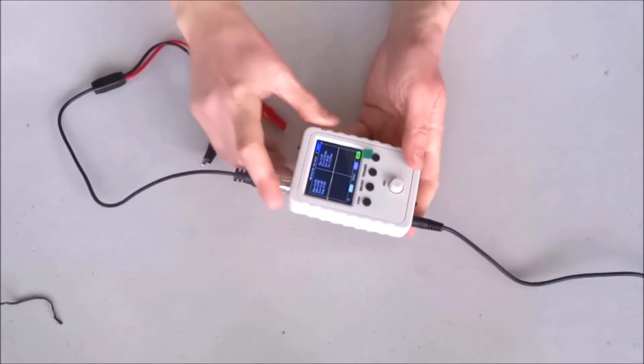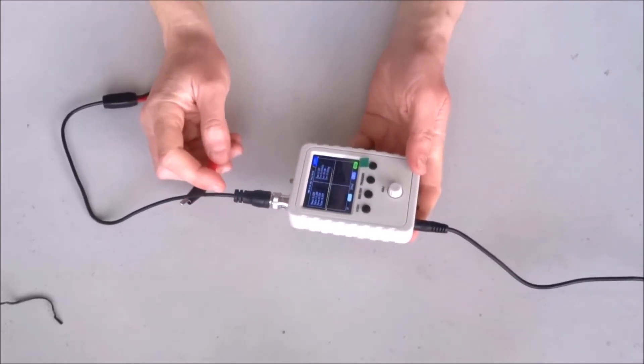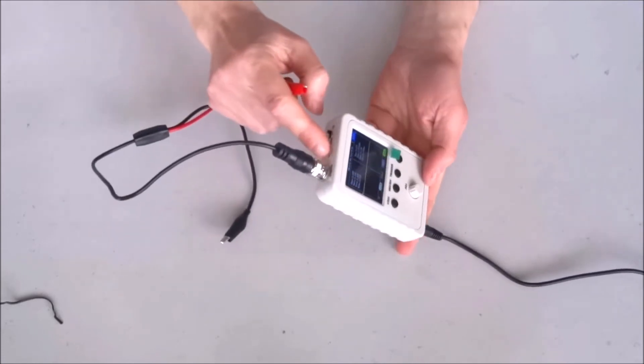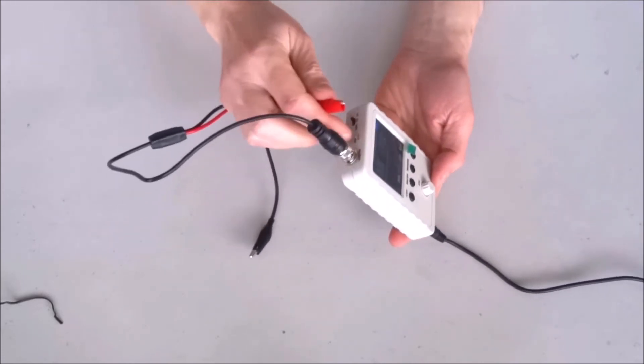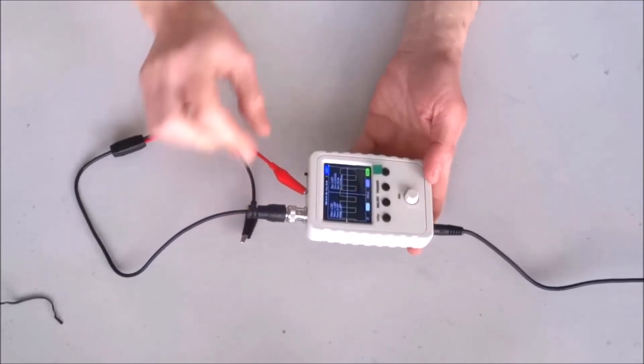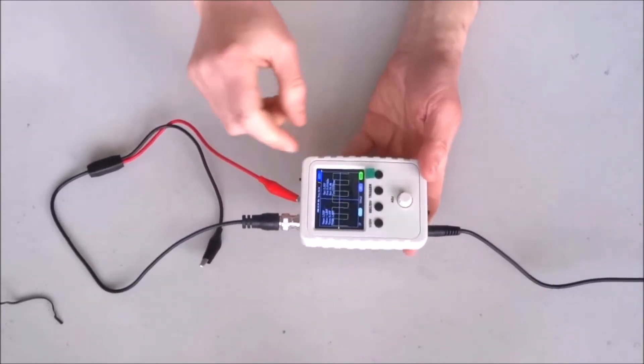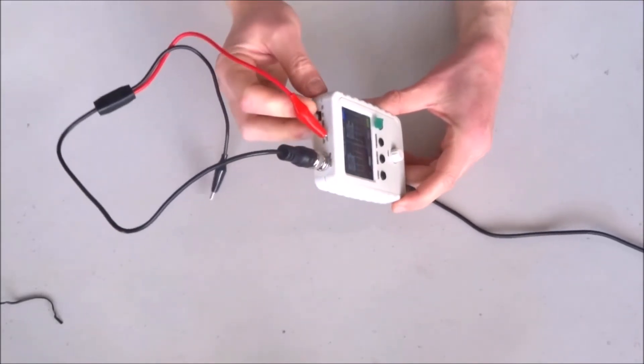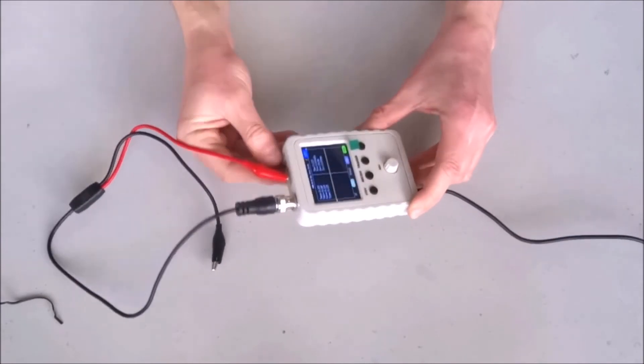After a bit of research and experimenting I have learned a little bit more about the scope. It has a test signal generator here where we can hook the probe and have a test square wave. We can also switch between AC, DC and ground.